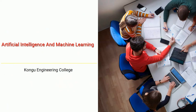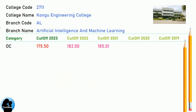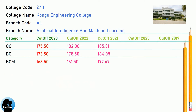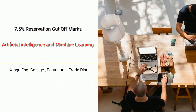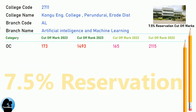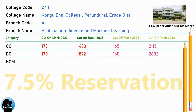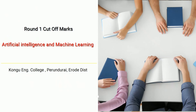DNA Cut-Off for Kongu Engineering College in Artificial Intelligence and Machine Learning. DNA 7.5 Reservation, DNA 2.5 Reservation, and DNA 3.5 Reservation Cut-Off for Kongu Engineering College in Artificial Intelligence and Machine Learning.